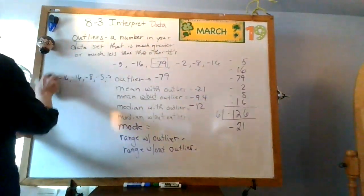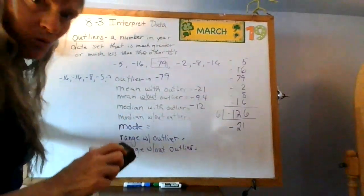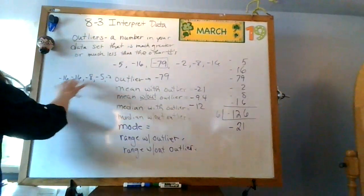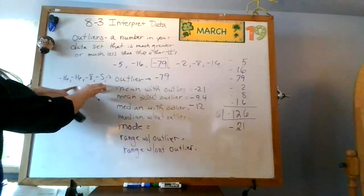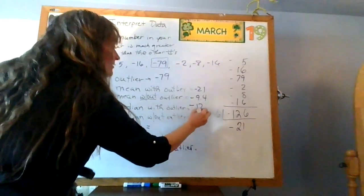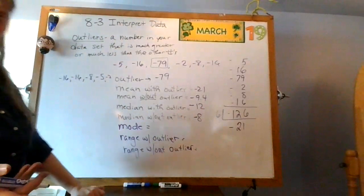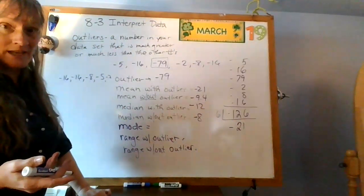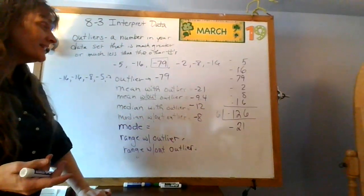Okay, what if I don't have that outlier? What if I have negative 16 over here? Then I would get negative 8. That's actually kind of a big difference in this particular case, isn't it?